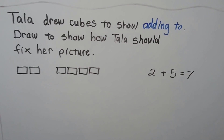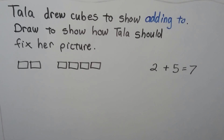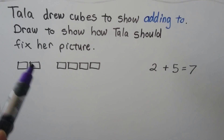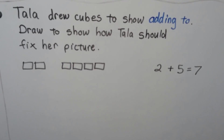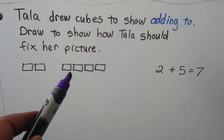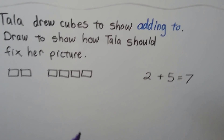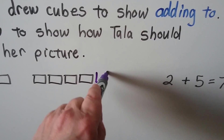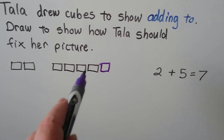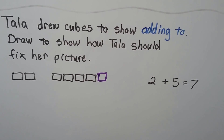Tala drew cubes to show adding to. Draw to show how Tala should fix her picture. She wanted to do two plus five is equal to seven, but this is what she drew. Do you see her mistake? Two and five more — is that five more? We can fix it by drawing one more here. Now we have one, two and one, two, three, four, five. She was just missing one of the counters. Now it's fixed.